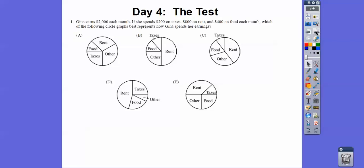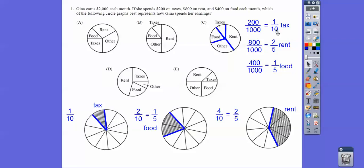Gina earns $2,000 each month, and she spends $200 on taxes, $800 on rent, $400 on food. Which of the following best describes her graph? We need to find the fraction amount. $200 divided by $2,000 is one-tenth.